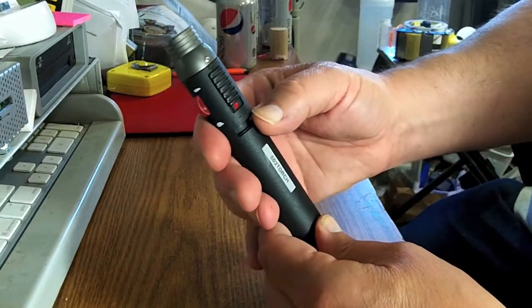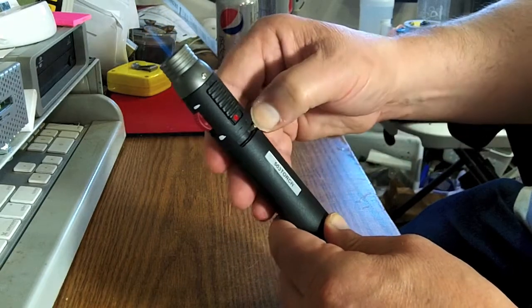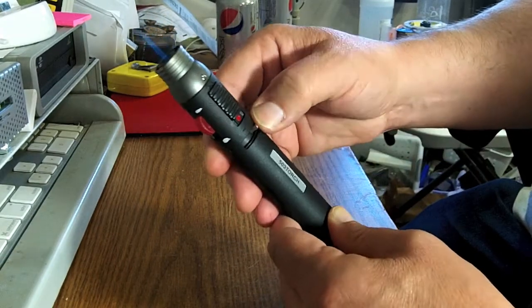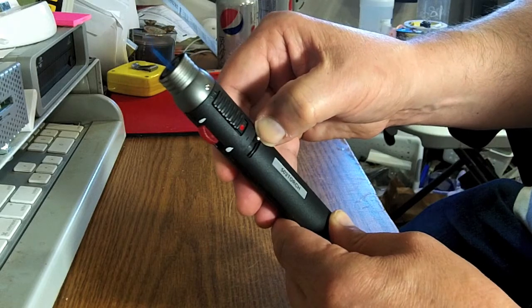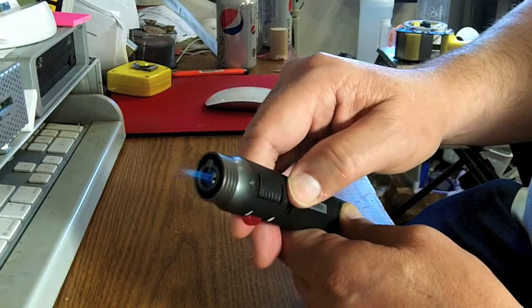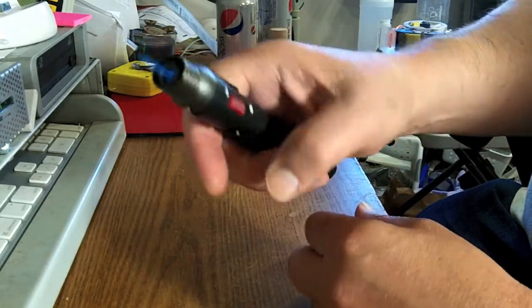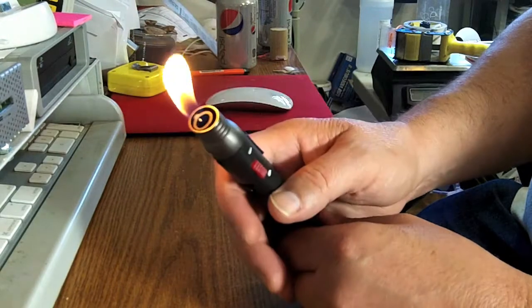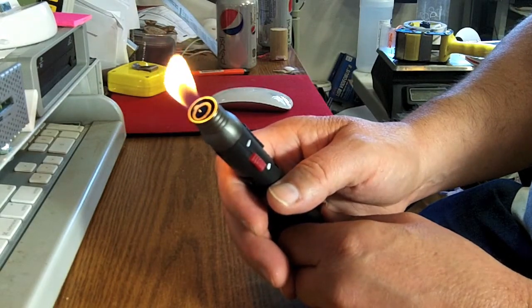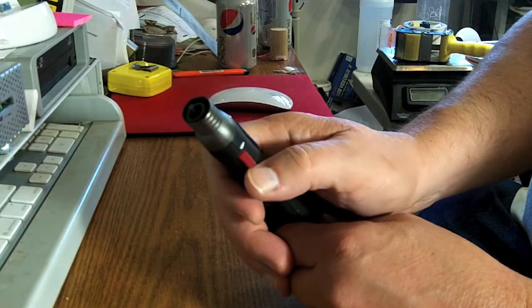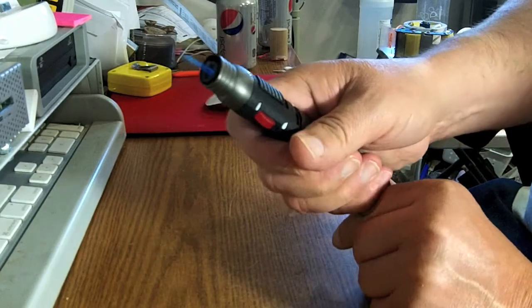You can, of course, turn it down a little bit. Like that. Turn it back up. You can switch it over to lighter mode and you see that just goes like to a cigar lighter. Push the button back. Turn it off.